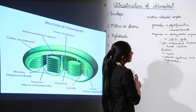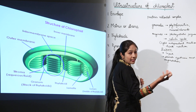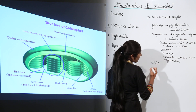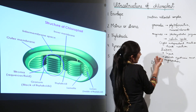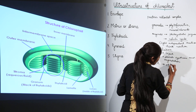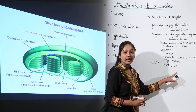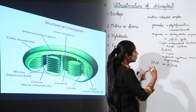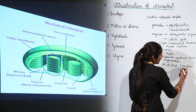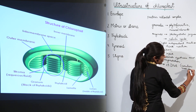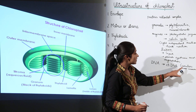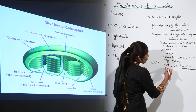Plastids have their own genetic material and chloroplast is a form of plastid — a green-colored plastid. So the stroma also contains DNA — deoxyribonucleic acid. In the case of chloroplast, we call it ctDNA, that is chloroplast DNA. Generally this chloroplast DNA is circular, but occasionally it can also be linear.